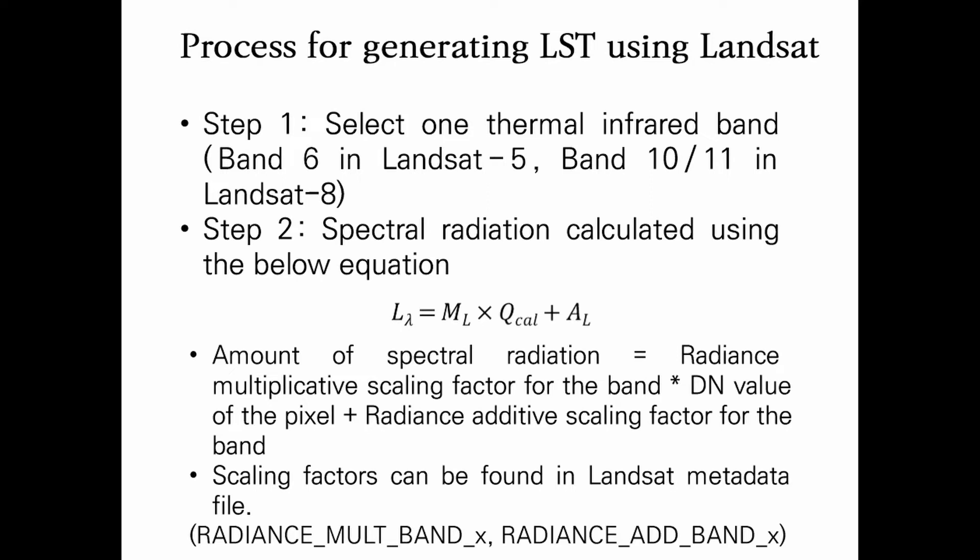In Step 2, spectral radiance should be calculated using the equation below. In this equation, the amount of spectral radiance is calculated by: Radiance Multiplicative Scaling Factor for the band, multiplied by the digital number value of the pixel, plus the Radiance Additive Scaling Factor for the band. Both scaling factors can be found in the downloaded Landsat metadata file.